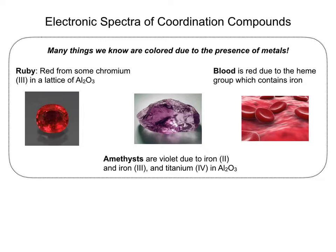Amethysts are violet due to iron-3, iron-2, and a little bit of titanium-4, also in an aluminum oxide crystal. Blood is red, and that red color comes from hemoglobin — specifically from the iron in the heme unit and the electronic transitions of that iron.